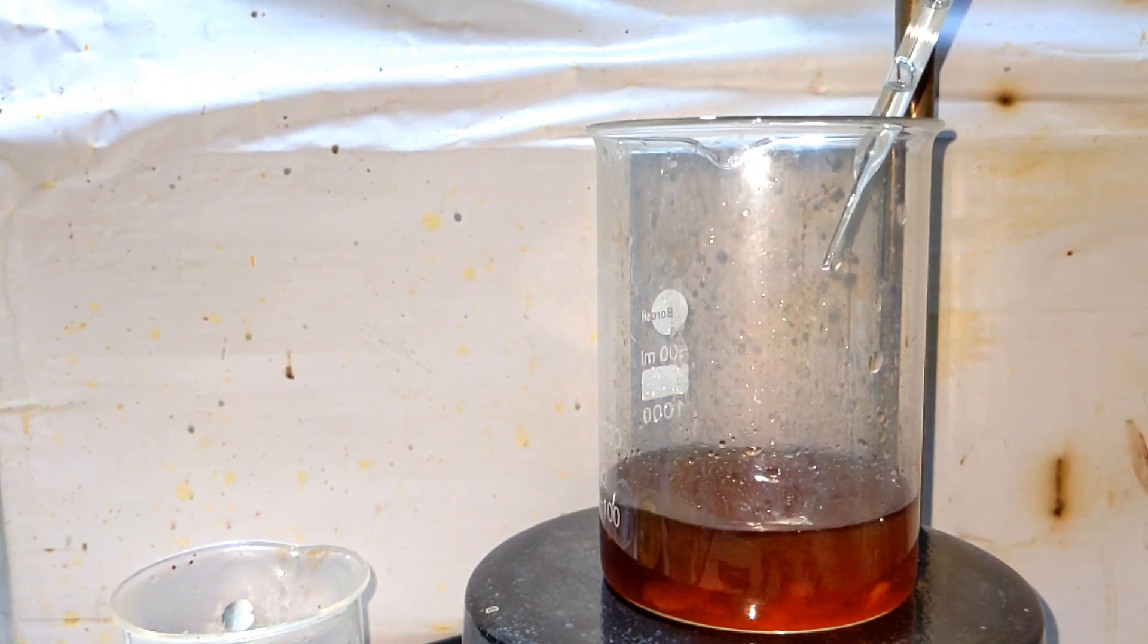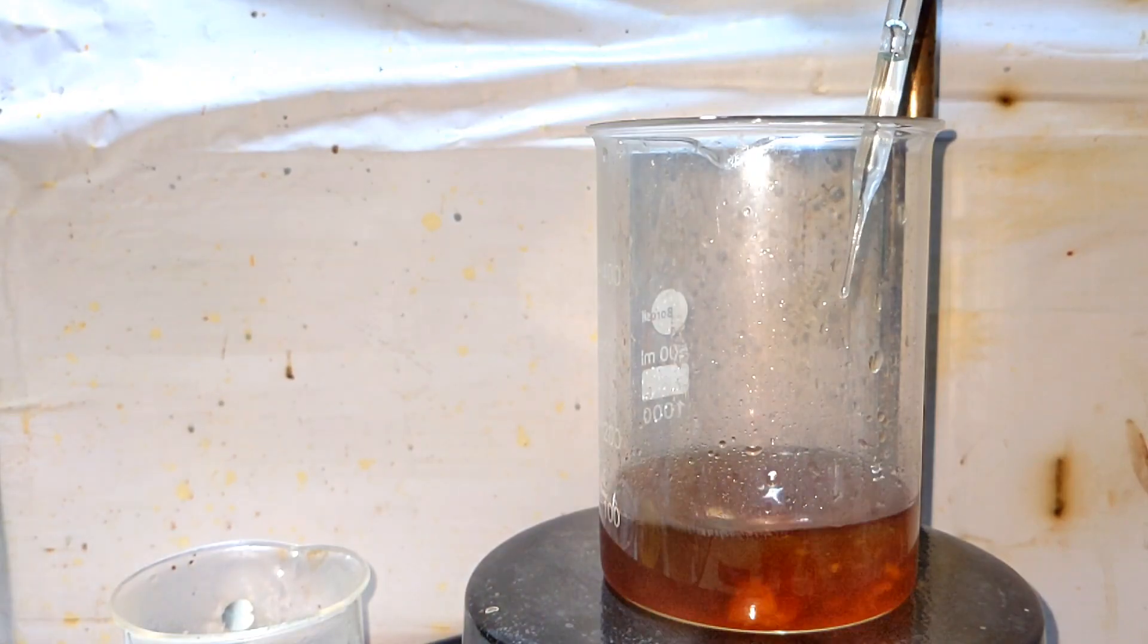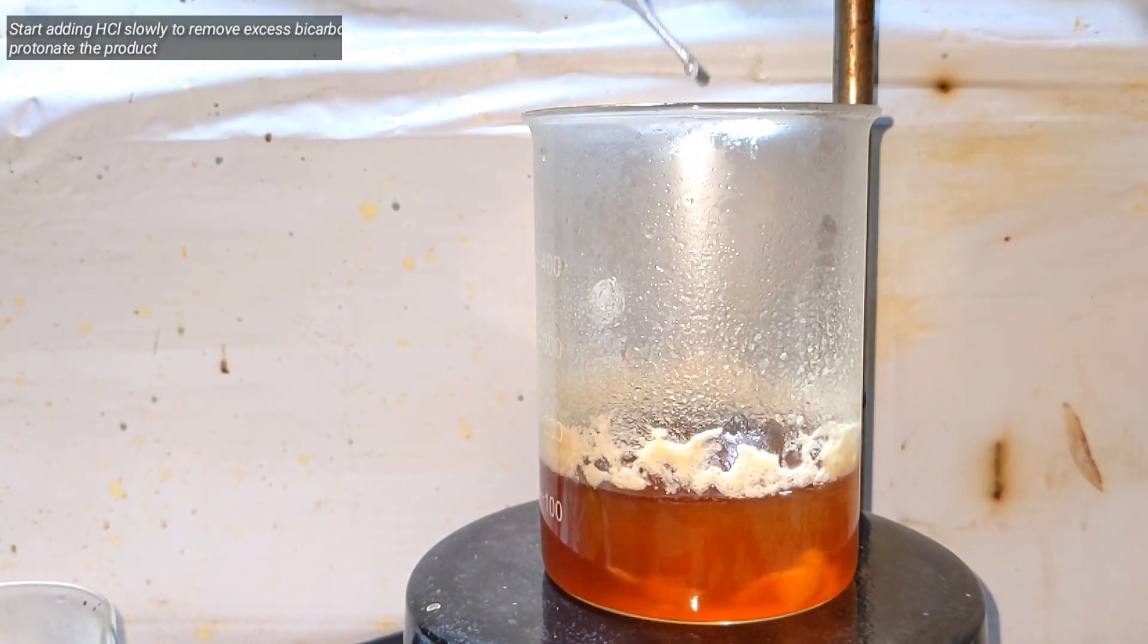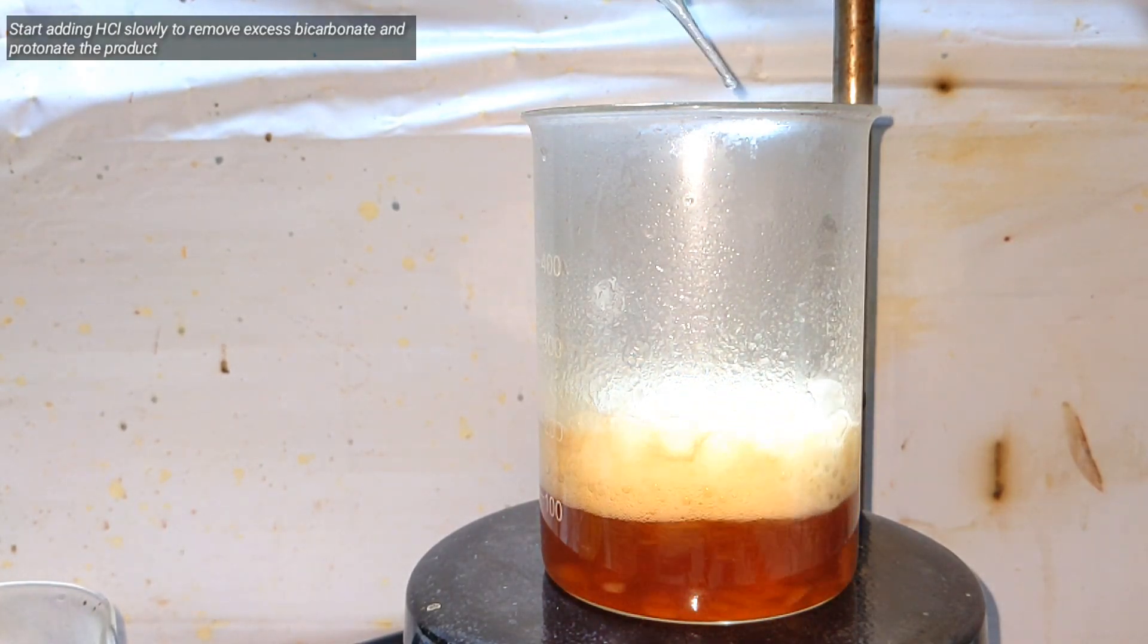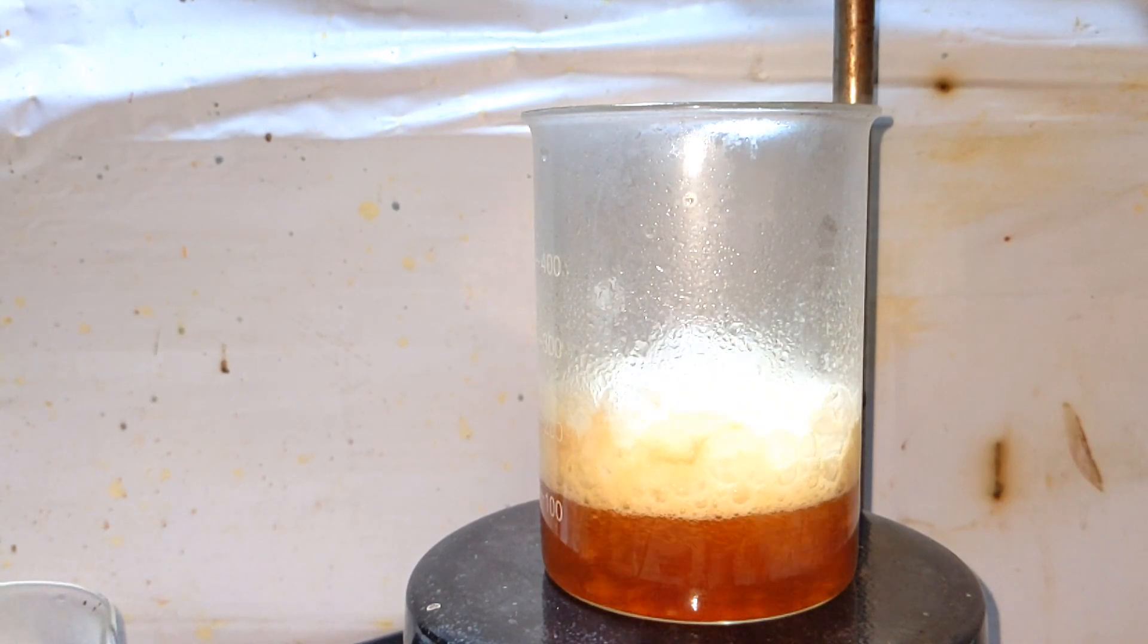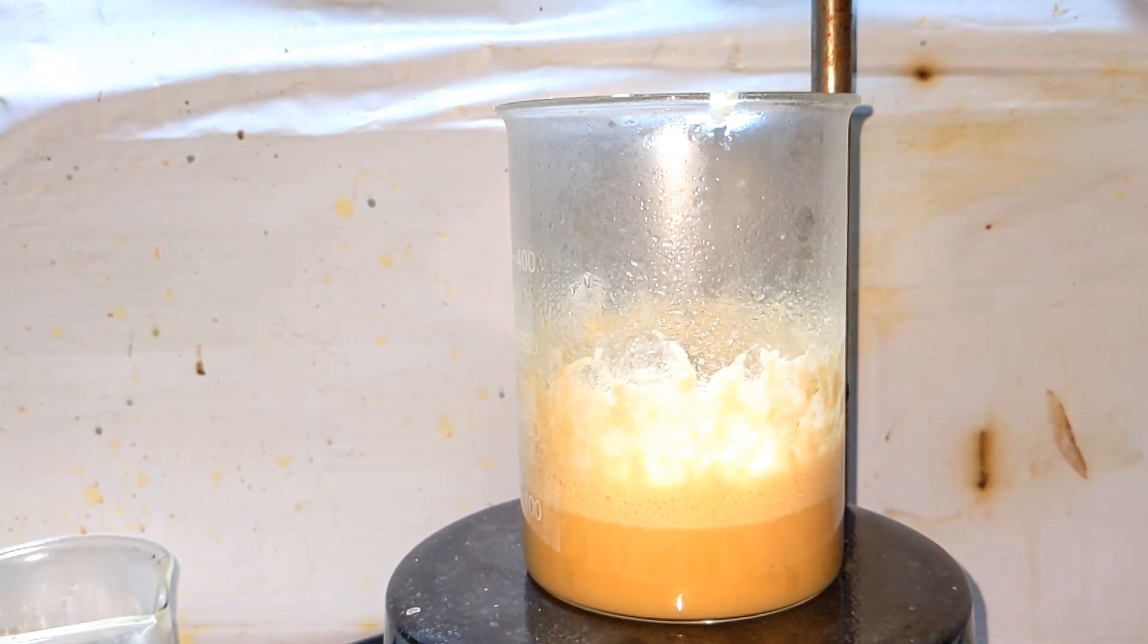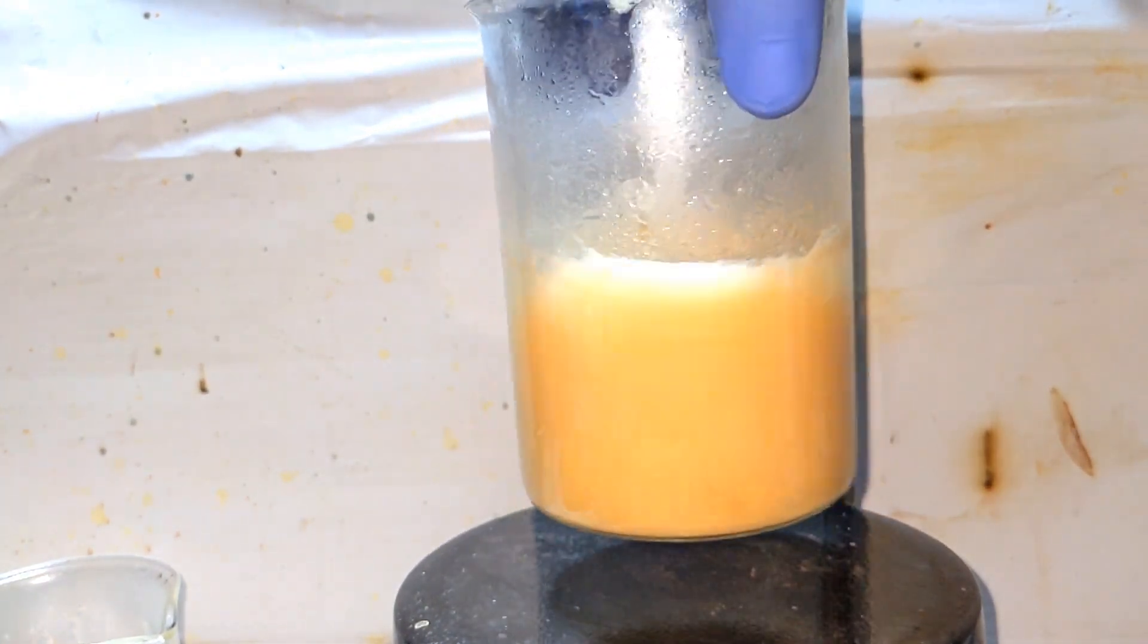This will cause the resorcilic acid to be protonated and the free acid and sodium chloride is formed. Resorcilic acid precipitates out of the solution as an off-white colored powder. The beaker was then placed overnight for complete crystallization to take place.